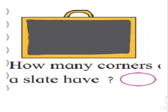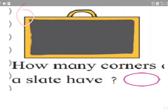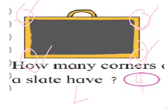What is this? This is a slate. How many corners does a slate have? It has four corners: one, two, three, four. Let's write four. Four — isn't it? Very good.